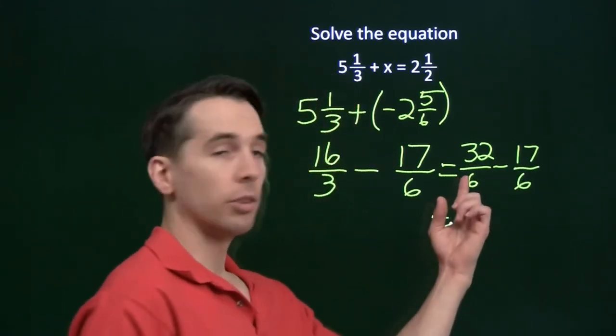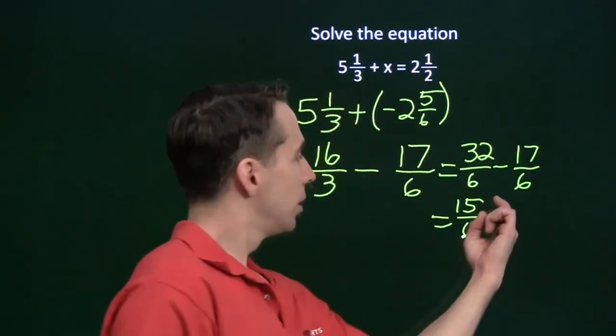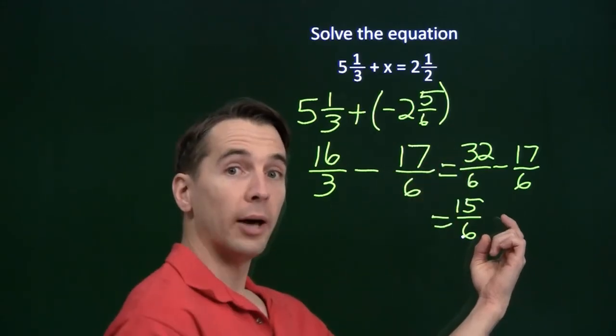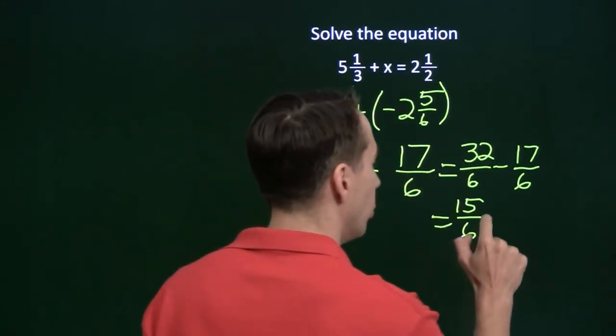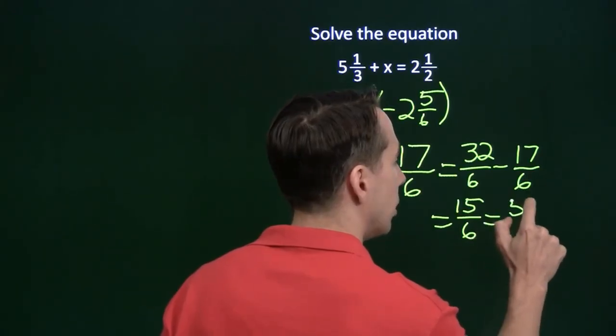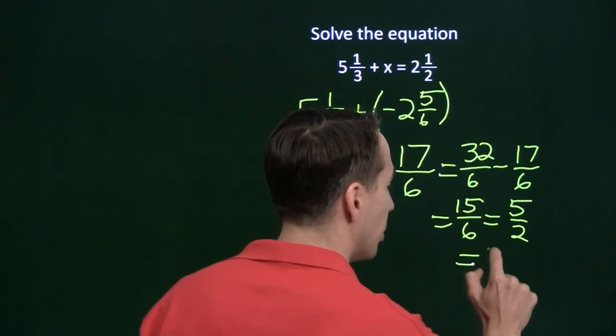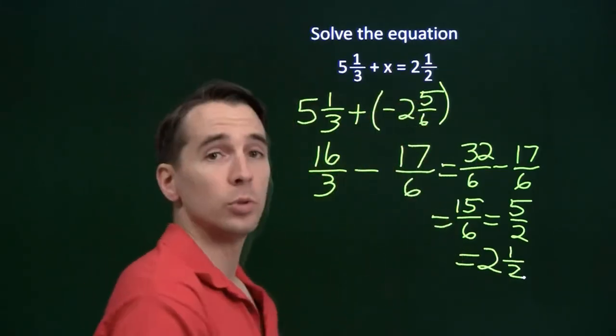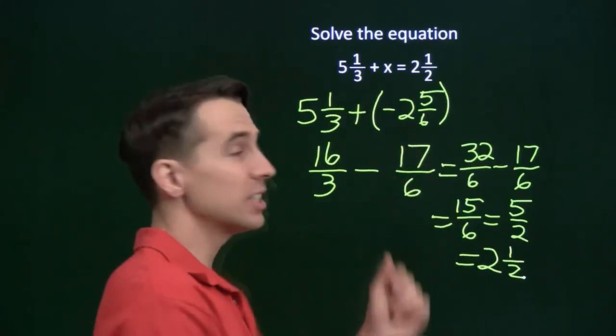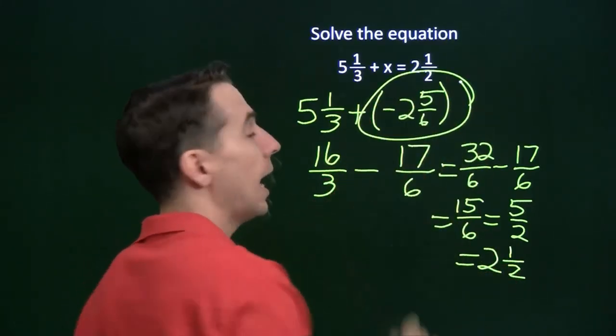We subtract. 32 minus 17 is 15 over 6. These are both multiples of 3. We can pull out a common factor of 3. That's 3 times 5. That's 3 times 2. We cancel the 3s, and we get 5 halves, and 5 halves as a mixed number is 2 and a half. So sure enough, when we put in x equals negative 2 and 5 sixths into the equation, it works. And we're done.